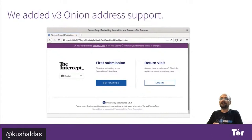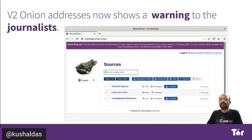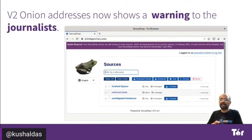We added V3 Onion address support, and as you can see in the screenshot, there are instances out there which are already using it. After we did that, we also added a deprecation warning to the journalists if their instance is still using V2 Onion addresses, clearly telling them when we are going to disable V2 Onion address support.